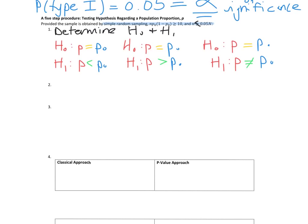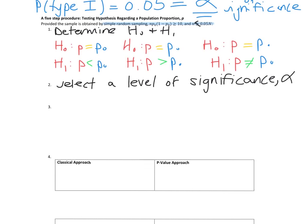Step two: select a level of significance. It's given to us in some problems; if it's not there, the default is alpha equals 0.05. Alpha is the probability of making a Type 1 error.